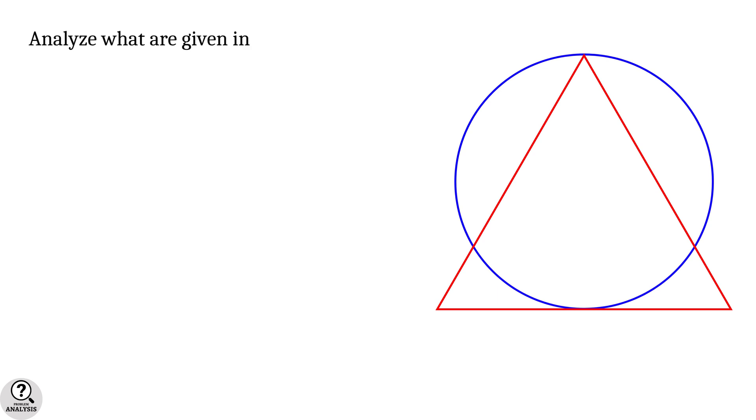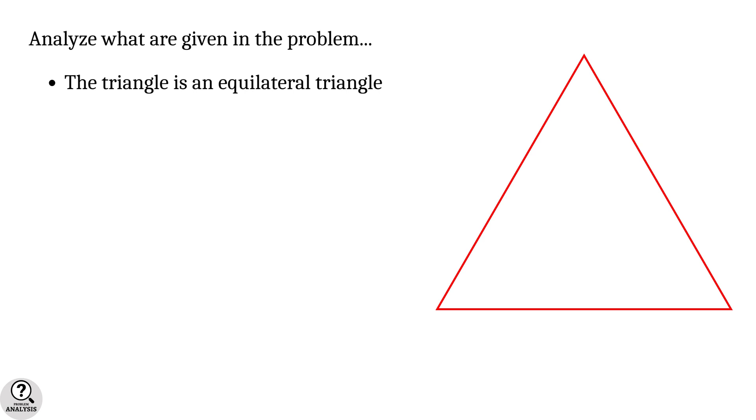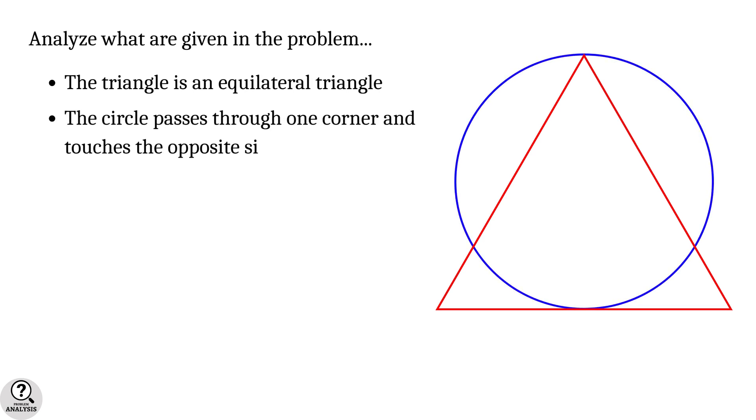First, let's analyze what are given in the problem. First of all, the triangle is an equilateral triangle. And then, the circle passes through one corner of the triangle and touches its opposite side.